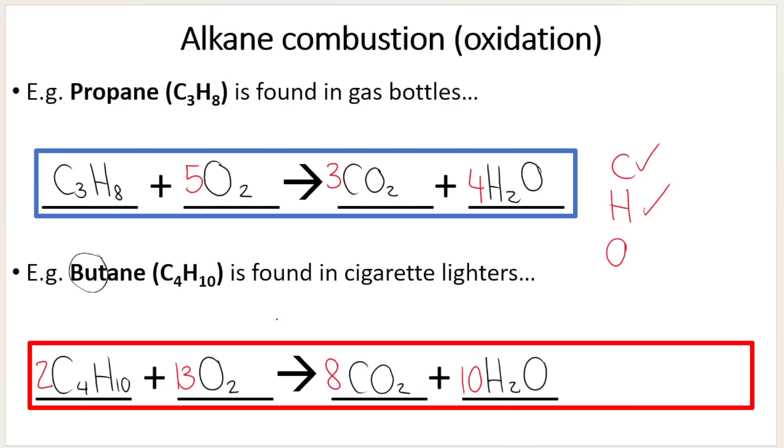Remember, when you balance a chemical equation, you need to make sure that the ratio, the coefficients over here, are in the simplest possible ratio. You can't simplify this ratio any further, so you know you've done it correctly.